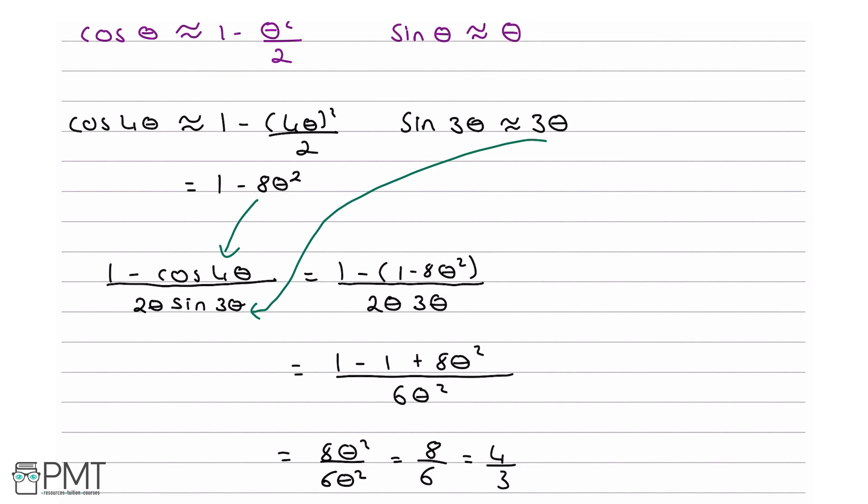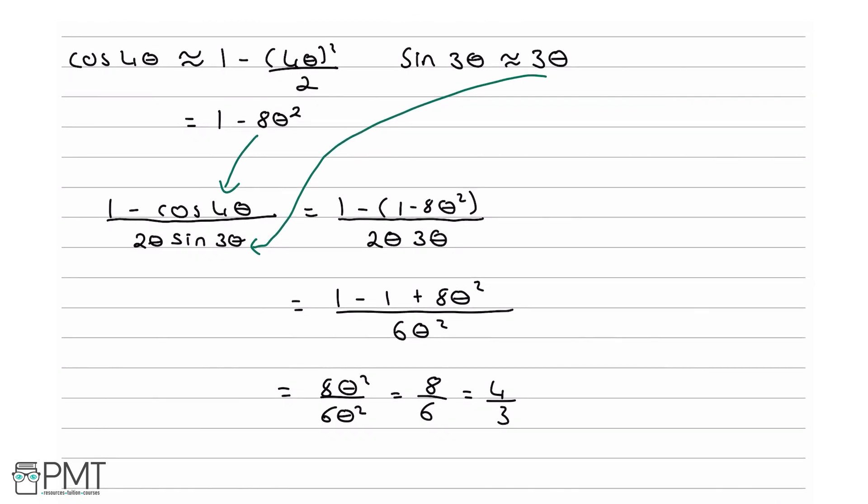For this question, you are awarded 3 marks. The first mark comes from attempting either cos 4θ or sin 3θ and correctly substituting it into the original equation. Your second mark comes from doing both cos 4θ and sin 3θ and correctly simplifying. Your final mark comes from getting 4/3 as your final answer. Thank you very much. I hope this video was easy to understand.